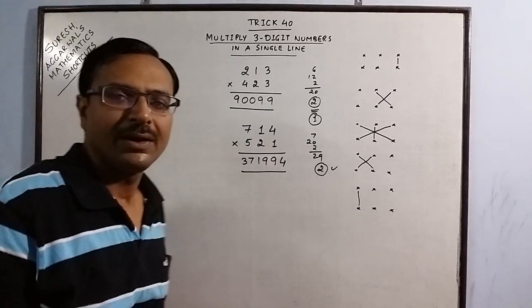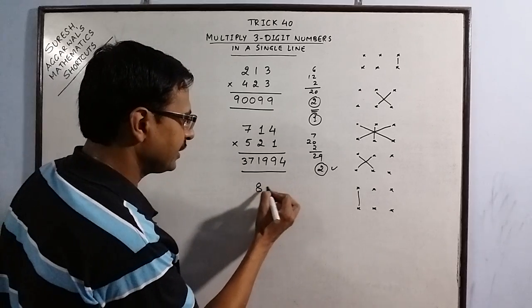Likewise you can work out 894 multiplied by 116.